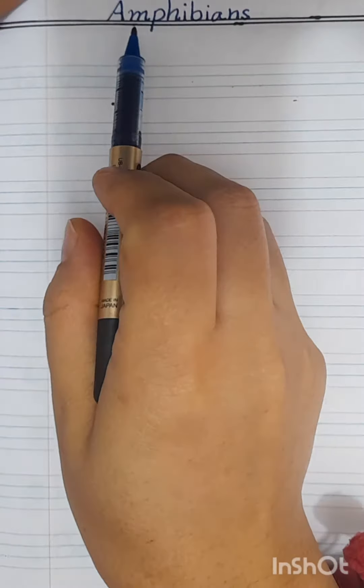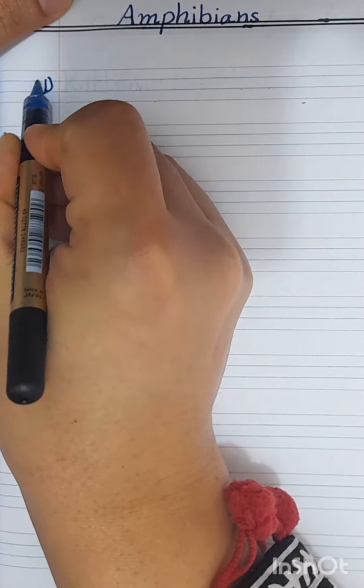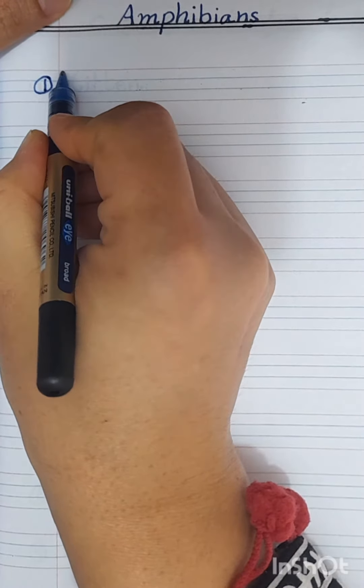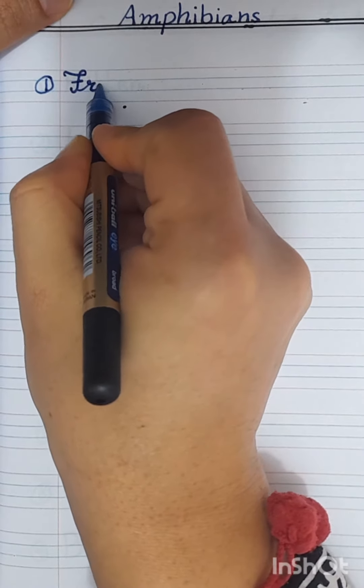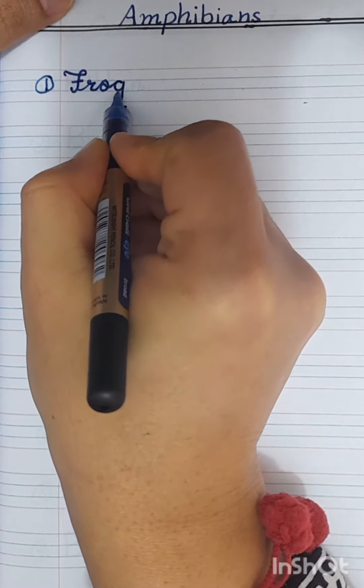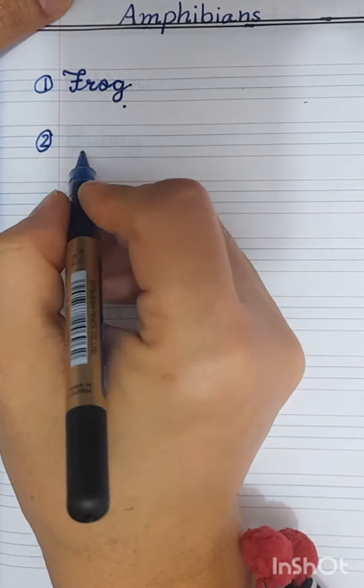Hello kids, today I will tell you about the amphibians. Number one: frog, F-R-O-G, frog. Number two: tortoise.